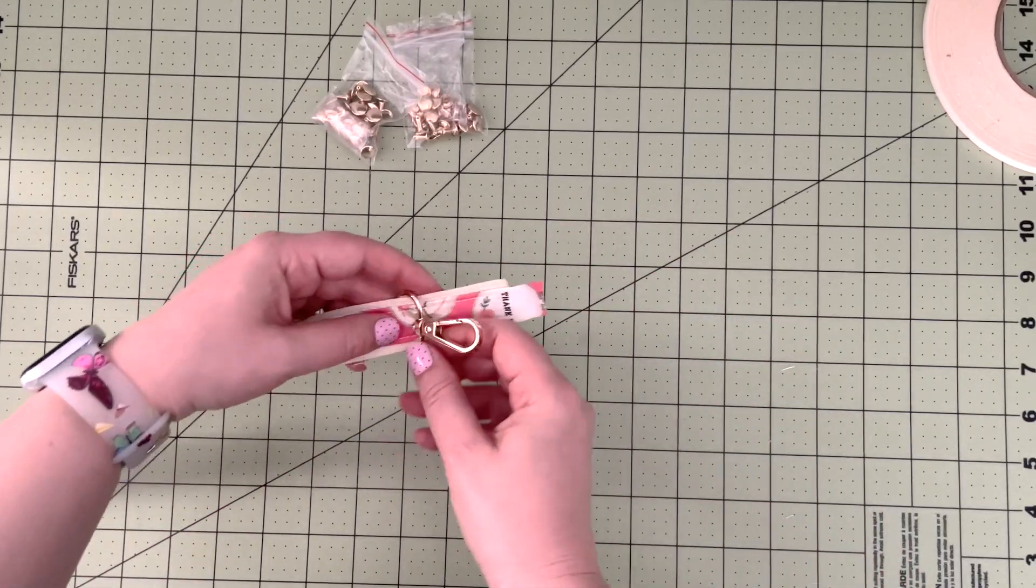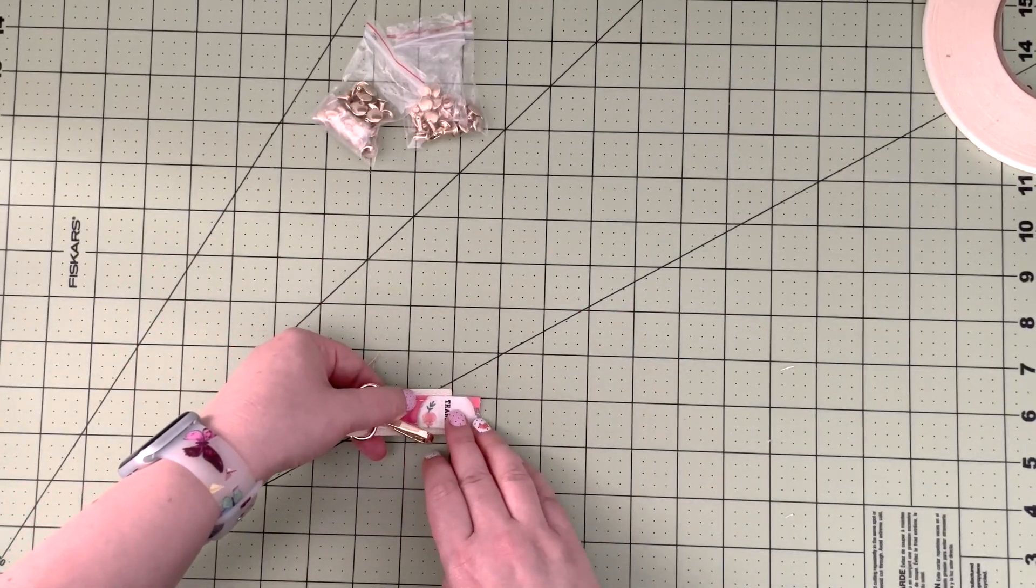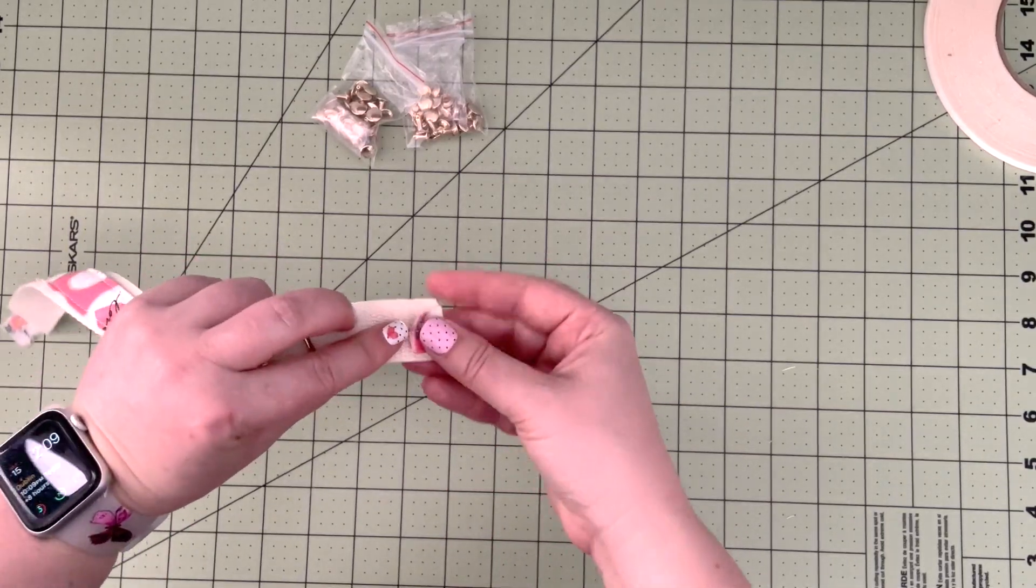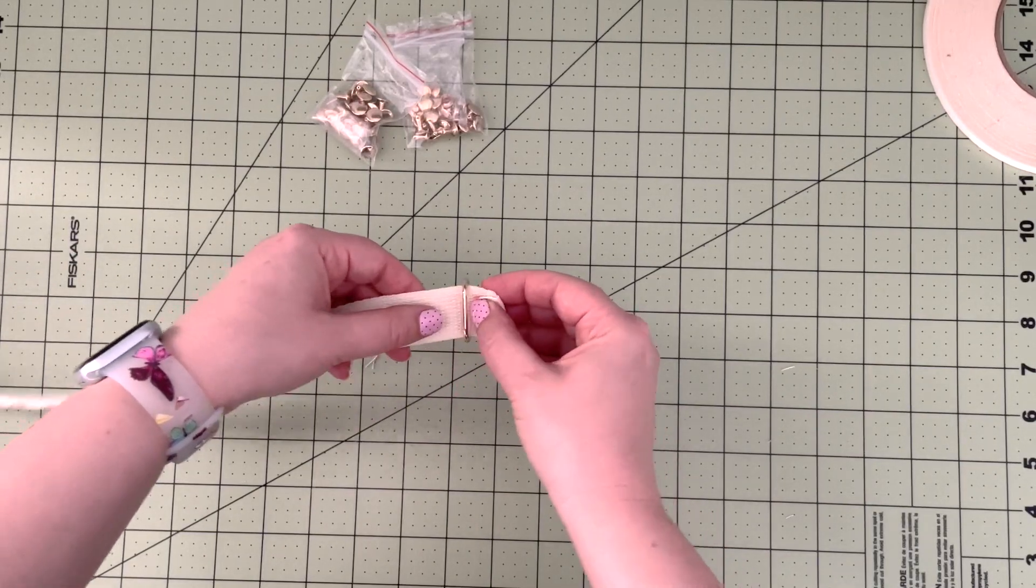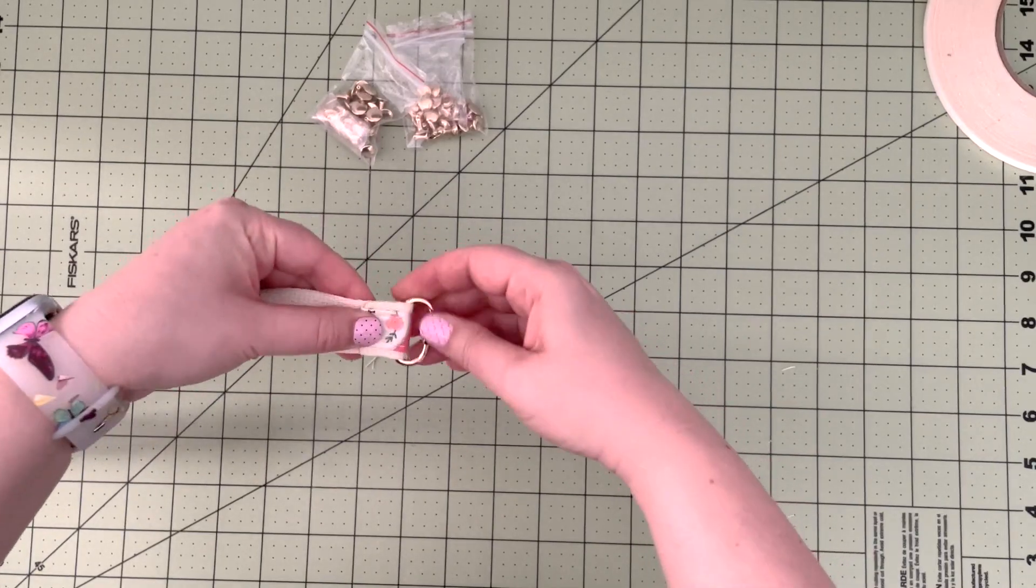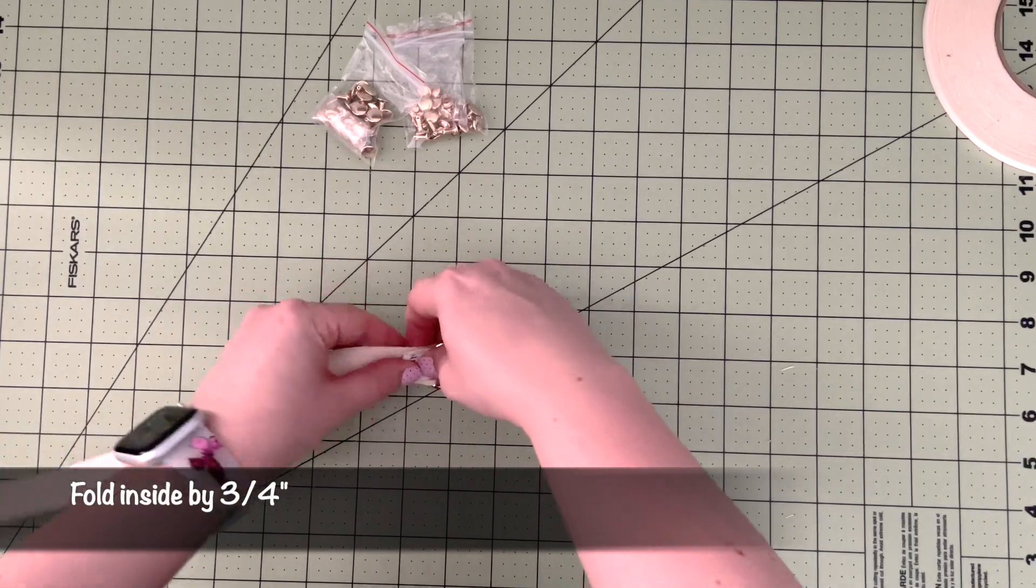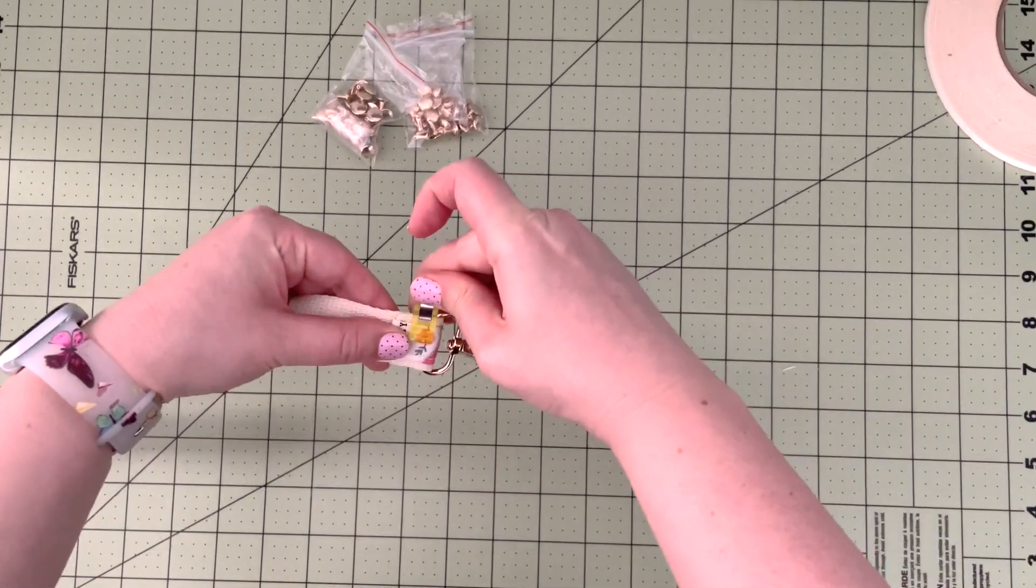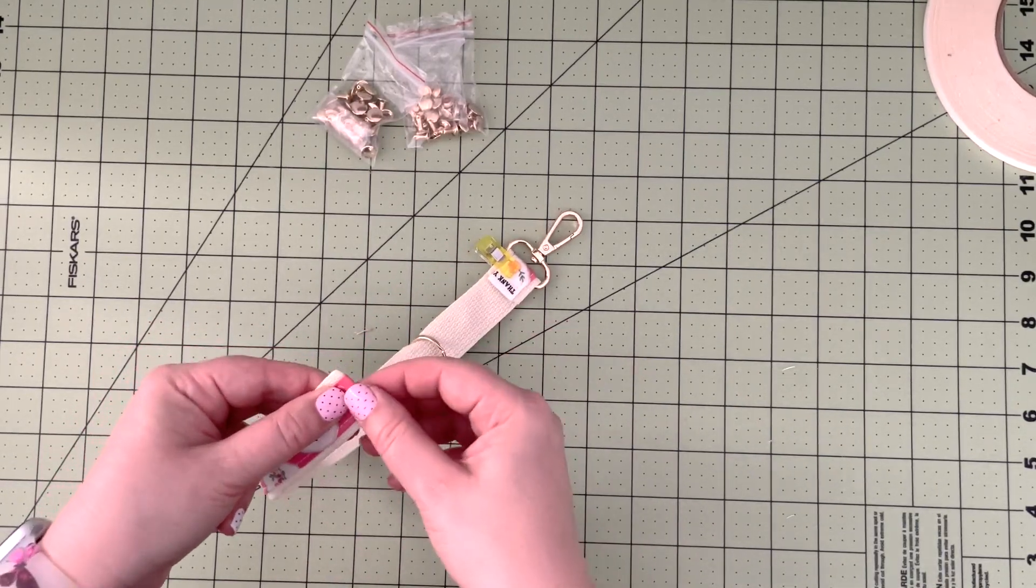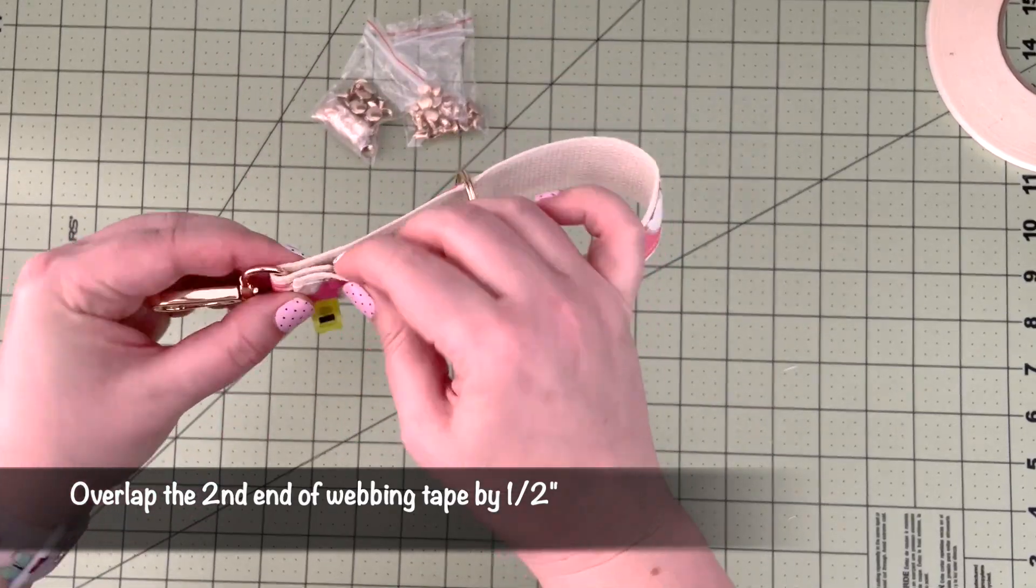Now on the end where the swivel clasp is, we're going to fold the raw edge of our accent fabric in. It should be around half an inch to three-quarters of an inch in length overhanging the webbing tape, so you can trim it if yours is longer. We're going to fold it inside, push the clasp down, and fold the webbing keeping the accent fabric folded inside. This fold should be overlapping by three-quarters of an inch, so you can temporarily clip it in place. Then you're going to take the other end of your webbing tape, fold the unfinished end of the fabric, and overlap the folded end by half an inch.